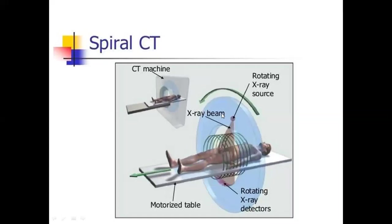Slip ring technology is used in three rings. The first ring provides high voltage power to the X-ray tube. The second ring provides low voltage to the control system on the rotating gantry. And the third slip ring transfers digital data from the rotating detector area.